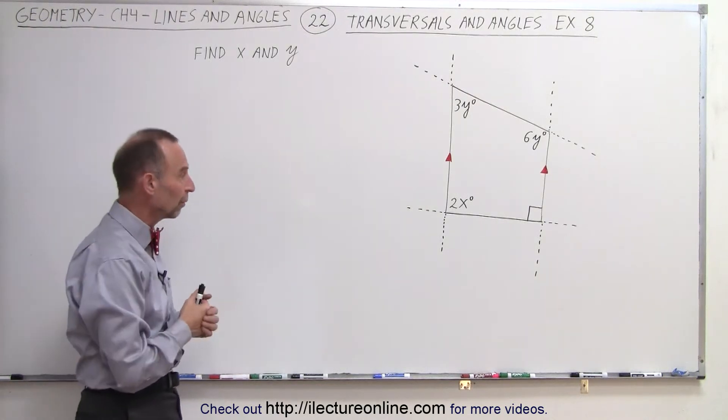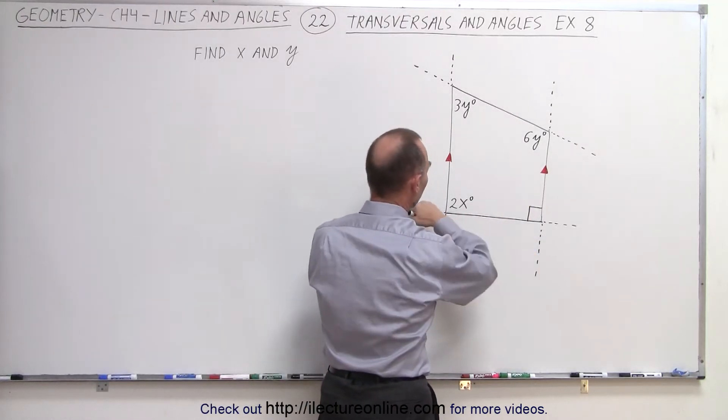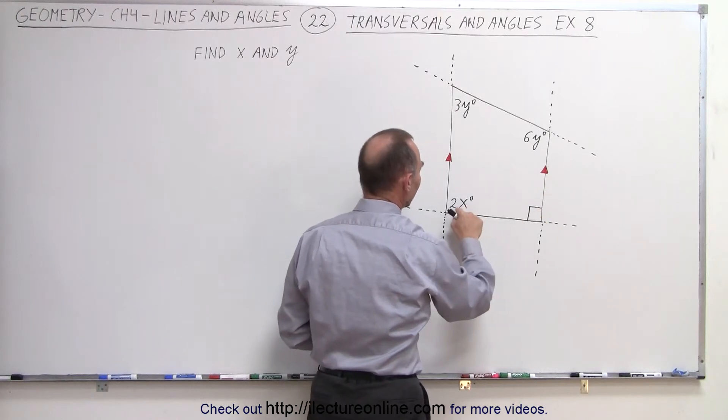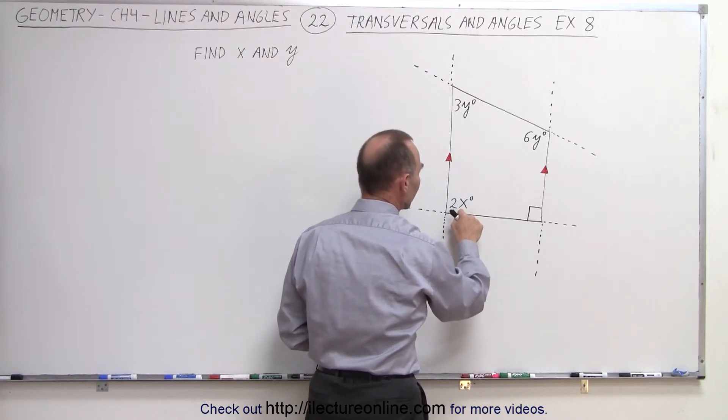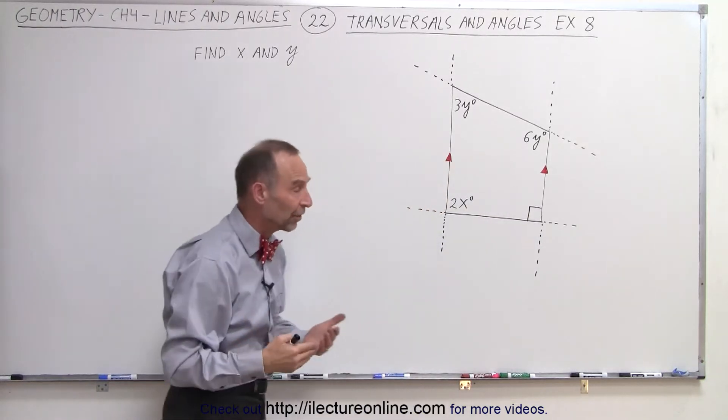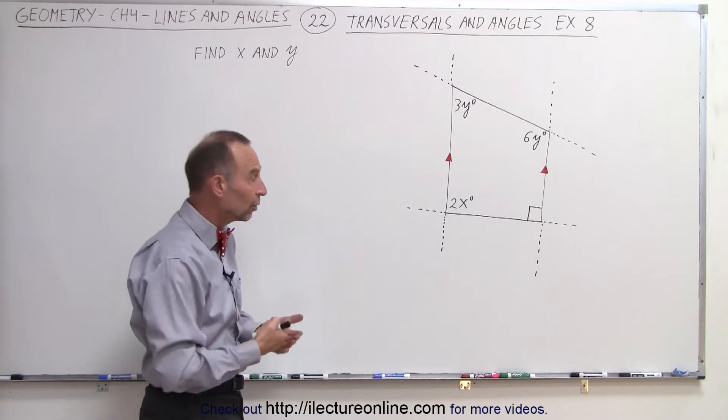Starting down here, notice that these two lines are parallel, this is a transversal, this angle here is 90 degrees, and this angle is 2 times x. Well, this angle and this angle are what we call consecutive interior angles, and by definition, they must add up to 180 degrees.